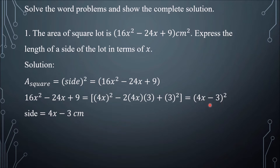So that is side squared. Therefore, the side is equal to 4x minus 3 centimeters.